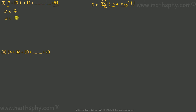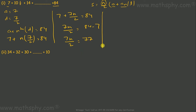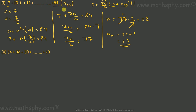Using the nth term formula: a + (n-1)d = 84. So 7 + (7/2)n = 84, which gives 7n/2 = 84 minus 7 = 77. Therefore n = 77 × 2/7.